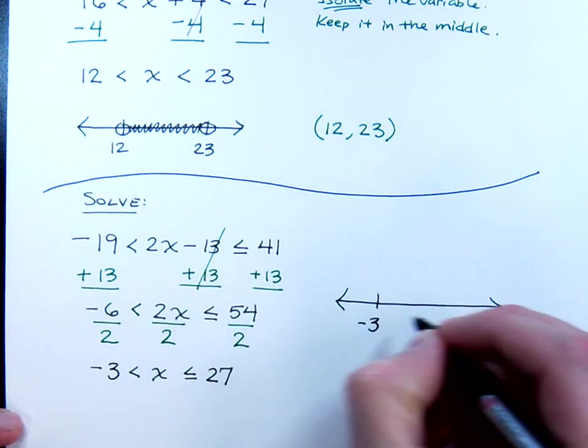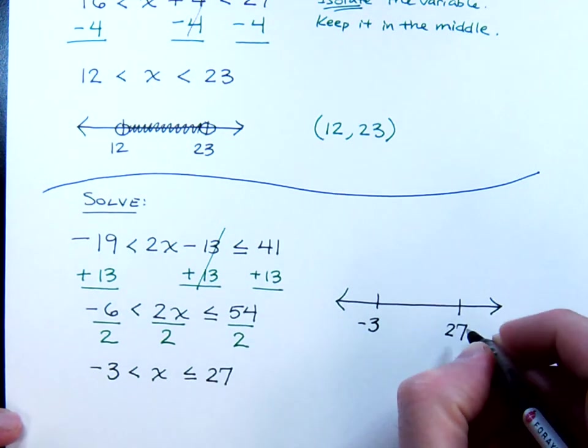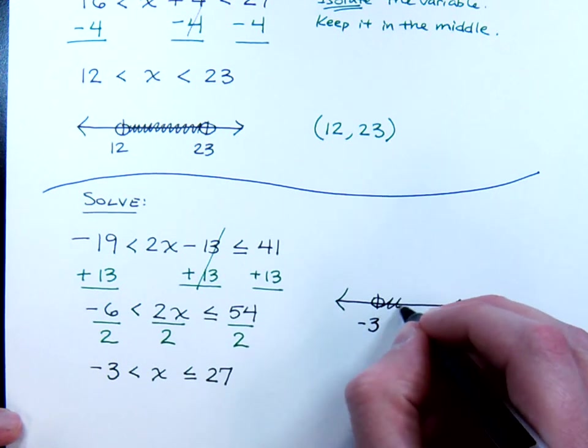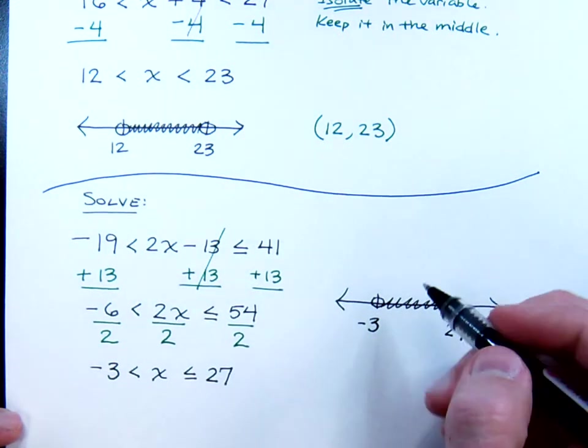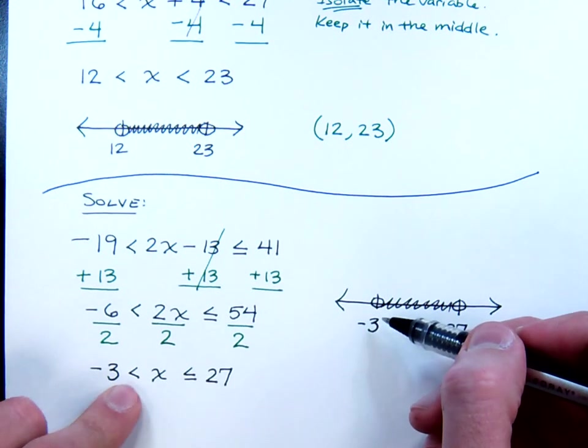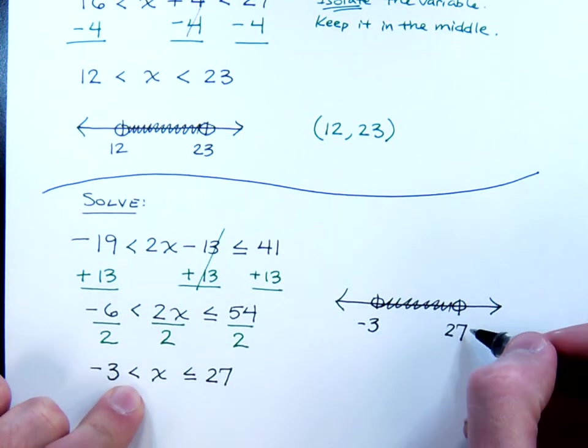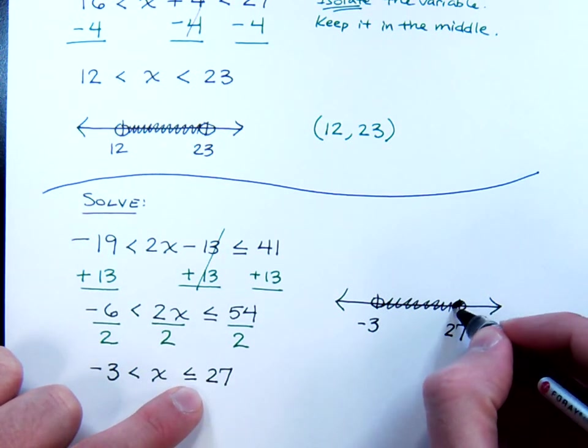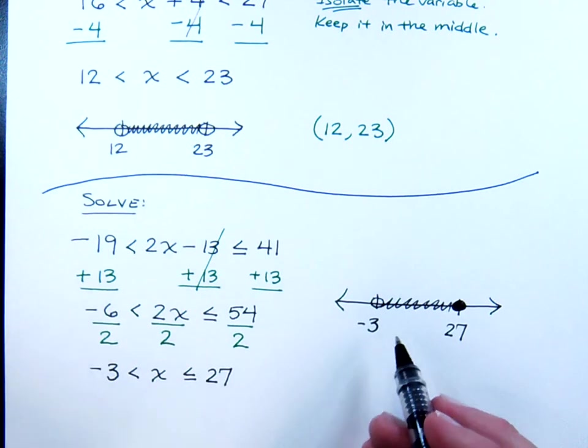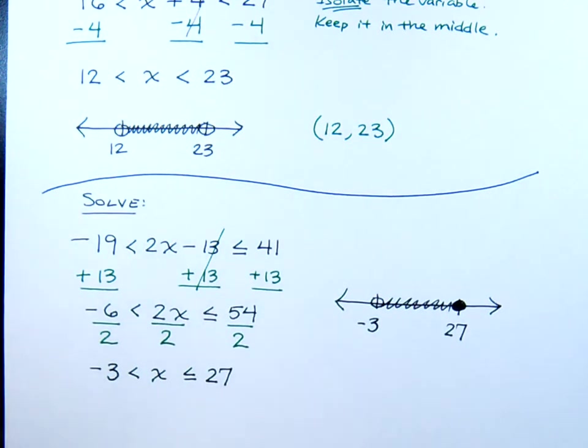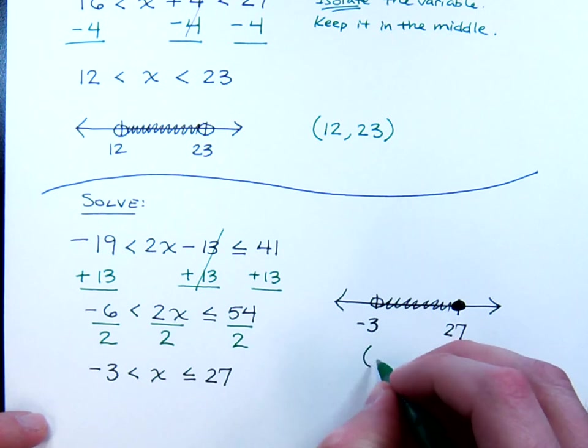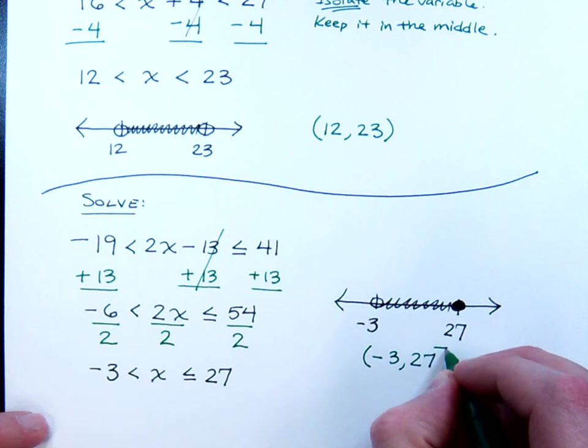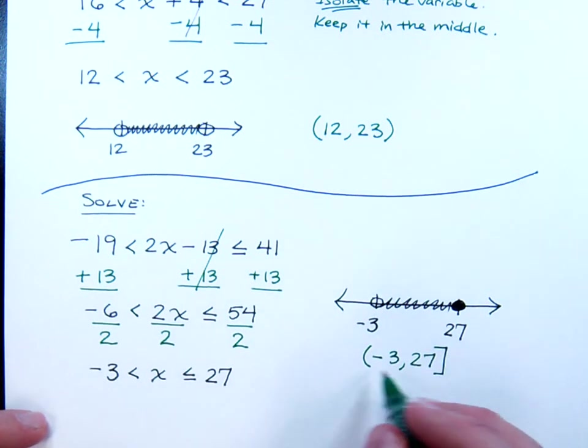Graphing this guy is something that should be getting pretty simple for you. Again, practice, practice, practice. So from negative 3 to 27, I know that I'm going to be including all those numbers in between. Do I get to include negative 3? No, because it's just less than but not equal to. Do I get to include 27? I've got the equal to part here, so that means I do get to include this. So this is the way the graph looks. And then we take this and we write the interval notation. So that's going to be from negative 3 to 27, parentheses on the negative 3, and a bracket on the 27.